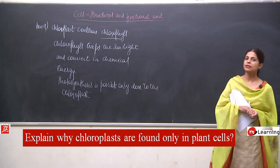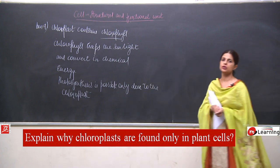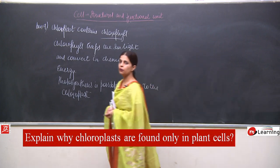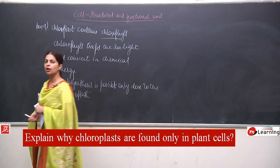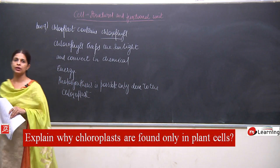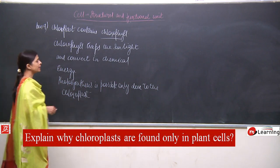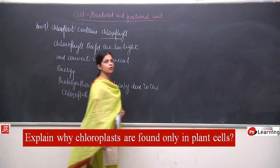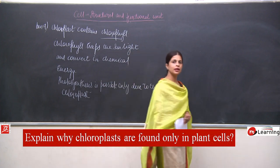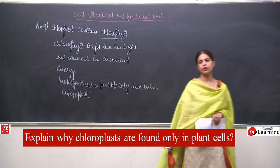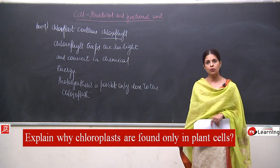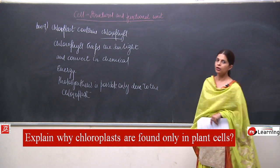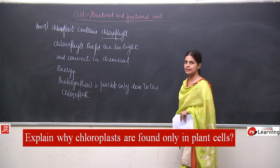Chloroplasts are present only in plant cells because plants are autotrophs — they need to prepare their own food and do not depend upon any other organism. You can write the point that plants are autotrophs and do not depend upon any other organism. They prepare their own food, for which they need chlorophyll or chloroplasts.